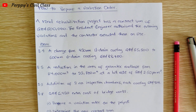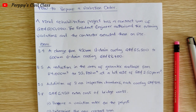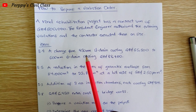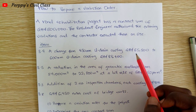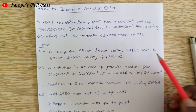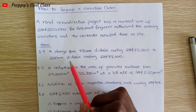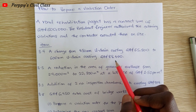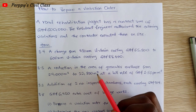Today's question is similar to that. A road rehabilitation project has a contract sum of 500,000 Ghana cedis. The resident engineer authorized the following variations and the contractor executed them on site. Item 3.4: a change from a 450mm U-drain costing 65,500 Ghana cedis to a bigger 600mm U-drain costing 88,400 Ghana cedis.